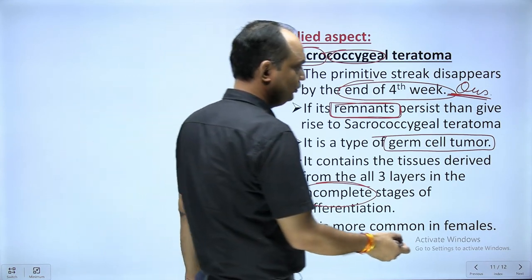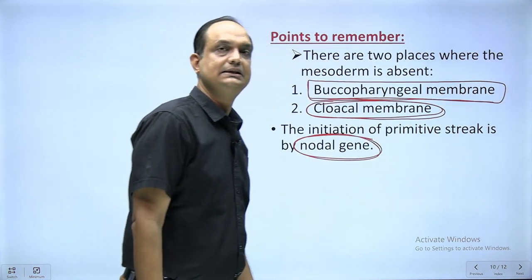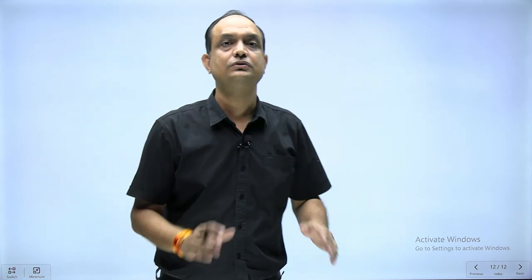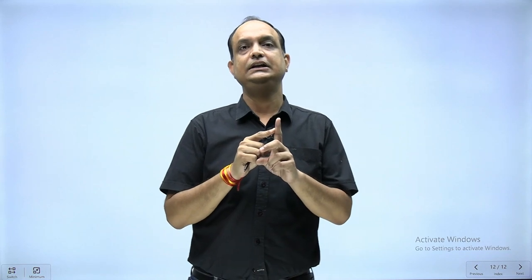Sacrococcygeal teratomas are more common in female babies and the incidence is 1 in 37,000 births. At the end of this lecture on gastrulation, you should have an idea about the definition of gastrulation, timing, initiating factor, primitive streak, primitive node, primitive groove, primitive pit, and migration of epiblast cells. Migratory cells form first endoderm then mesoderm, and non-migratory cells give rise to ectoderm. This is all for gastrulation, thank you.